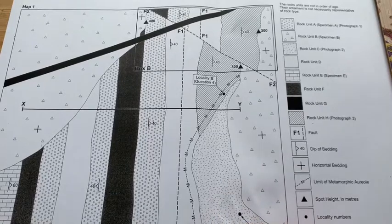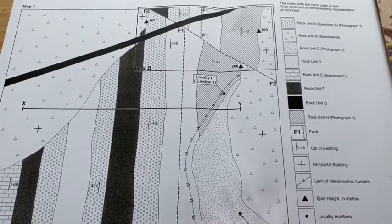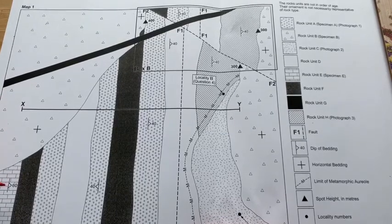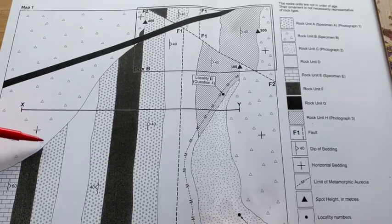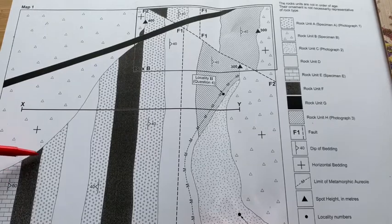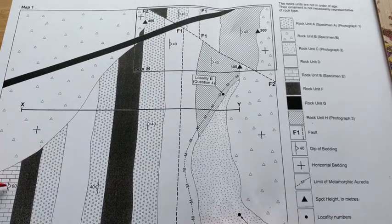Looking at this map, one of the first things I can spot is that we have an unconformity. We can see this from the change in dip amount and dip direction, and it is at the base of rock unit B. If we look at this area of the map, we can see a layer which is horizontal, and directly below it we've got boundaries which have been truncated by it, and the layers below this particular boundary have got a steeper angle and a change in dip direction.